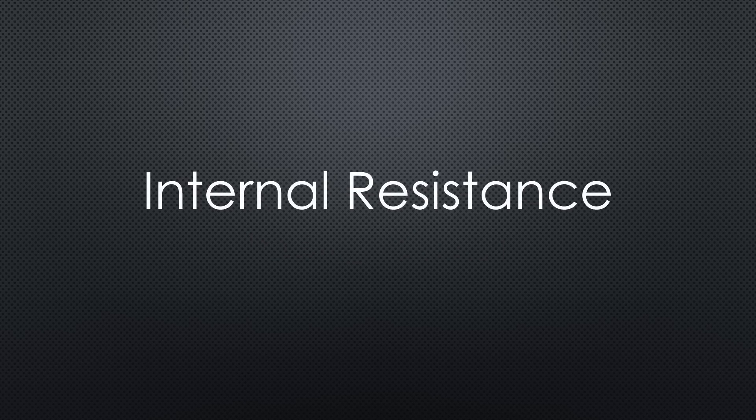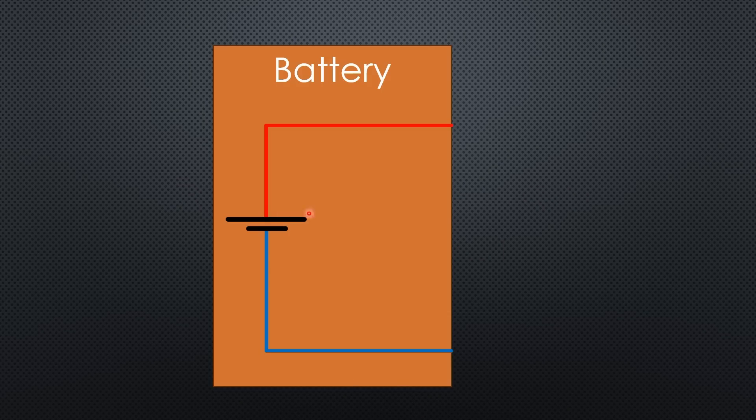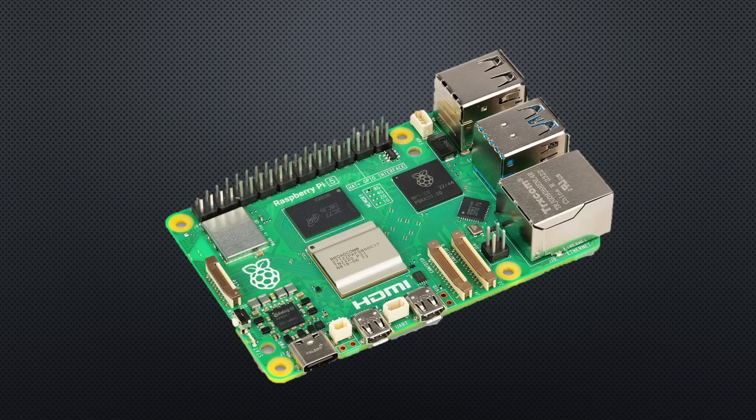Now let's discuss internal resistance. Batteries can be modeled as an ideal voltage source with a small resistor in series. This resistor, inherent to the battery's construction, has two drawbacks. First, the voltage loss reduces usable energy. And second, heat dissipation is bad for batteries. For example, a Raspberry Pi may crash under high load if your power supply's internal resistance is too high.